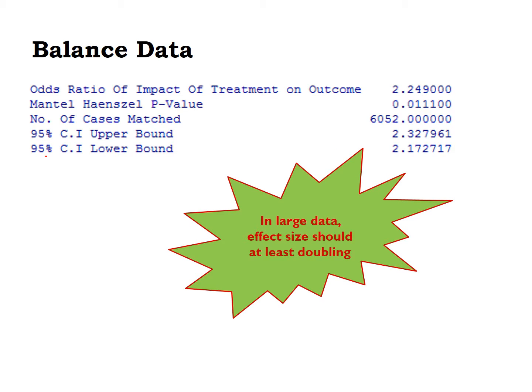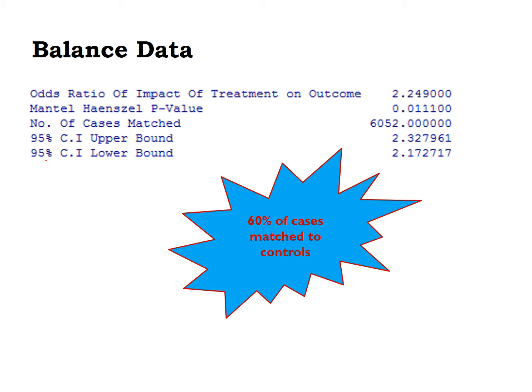In large data, the effect size should at least be doubling. Here we see that the effect size is more than double. We have about 10,000 cases in this data analysis, so it is considered large. Even if it were statistically significant, if it wasn't more than doubling, we would not accept it. So in large data, you need two things: both statistical significance and a large effect size. Note that about 60% of cases were matched to controls, so about 40% were not matched. As the number of covariates increases, fewer cases may get matched, making it difficult to generalize from a stratified covariate balancing with a large number of covariates.